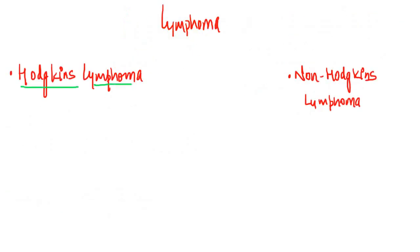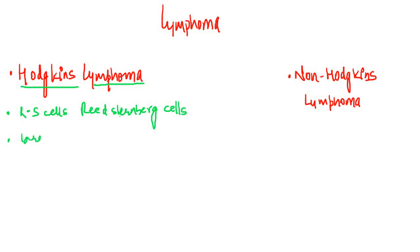Now if we take on Hodgkin's lymphoma, it is basically characterized by a specialized type of cells called RS cells or Reed-Sternberg cells. It is the presence of these Reed-Sternberg cells that characterizes a lymphoma as Hodgkin's lymphoma. These Reed-Sternberg cells are actually large B cells, so they will have markers of B cells. They have specialized markers like CD15 and CD30. Normally in B cells, CD19, CD20, and CD10 are found, but in Reed-Sternberg cells, additional markers like CD15 and CD30 are found.